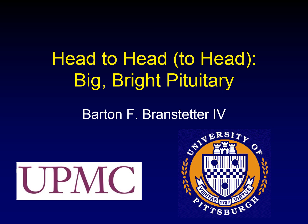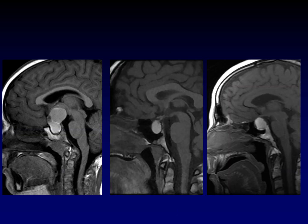Frank suggested prioritizing this head-to-head case. Normally there are two different patients with two different diseases, but in this case you get a bonus patient — three patients with three different diseases! In each of these cases, the pituitary gland is enlarged, and on unenhanced T1 sagittal images it has high intensity. Pause the video here and see if you can figure out what diseases these three patients have.